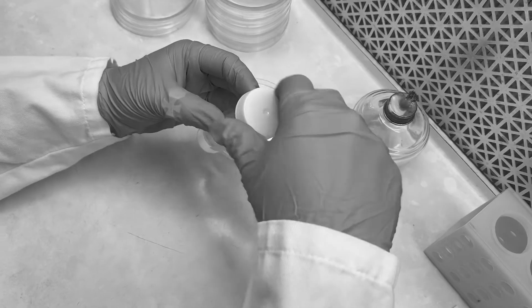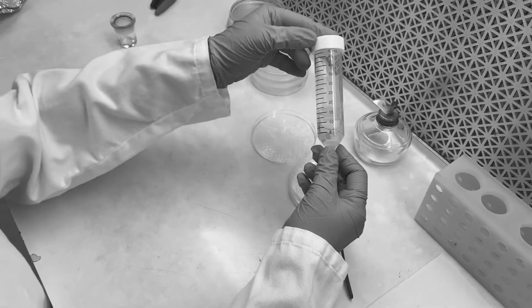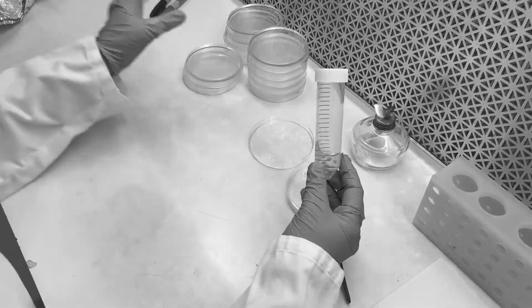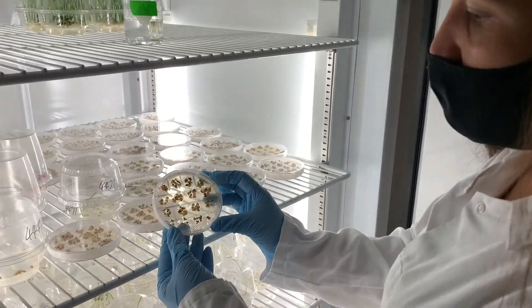But how do we know which plants to keep during the positive selection? The genetic differences are not visible to the naked eye. We actually took care of that when we infected the cells with the Agrobacterium. The piece of DNA transferred to the right cells didn't just have the gene we are interested in — it also had a selection marker gene. Only the calli that received the selection marker, and therefore the gene of interest, are able to grow in the medium containing the special chemical.